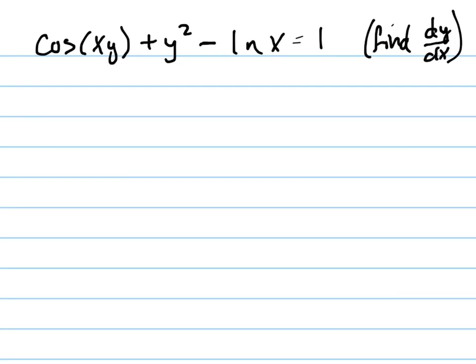Alright, here's an implicit differentiation problem. Here's your problem. Cosine xy plus y squared minus natural log of x equals 1. Find dy dx.